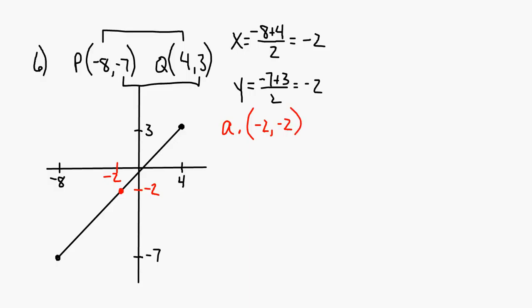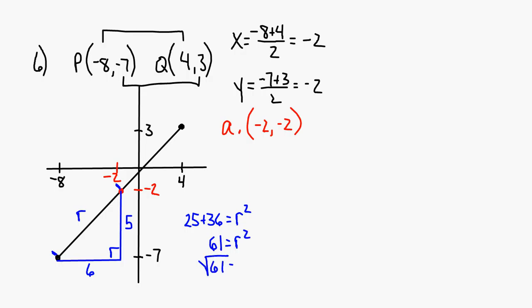Question B said find the radius. If negative 2, negative 2 is your center, you can take this and turn it into a right triangle, following the same steps as previous problems. Your vertical leg is going to be 5 and your horizontal leg is going to be 6. So 25 plus 36 equals r squared: 61 equals r squared, and the square root of 61 equals your radius. Since the answer is not an integer, express it in radical form: the square root of 61.